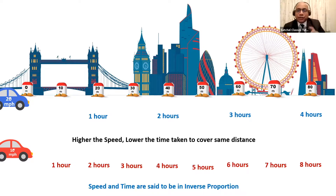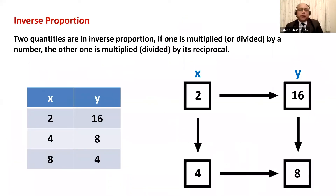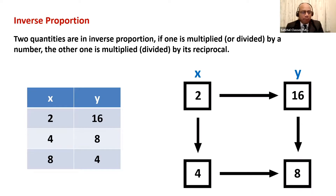Remember, it's not direct proportion. In direct proportion, if one increases, the other one also increases. This is inverse proportion because if one quantity increases, the other one decreases. Two quantities are said to be in inverse proportion if one is multiplied or divided by a number, the other is multiplied or divided by its reciprocal.